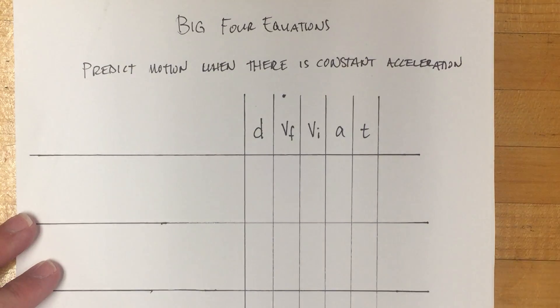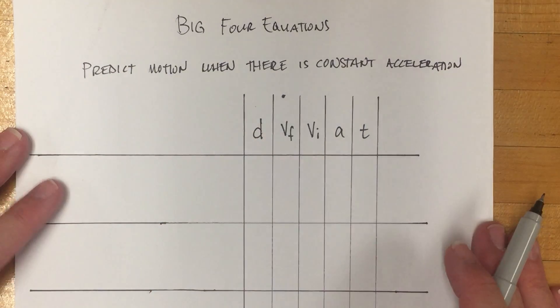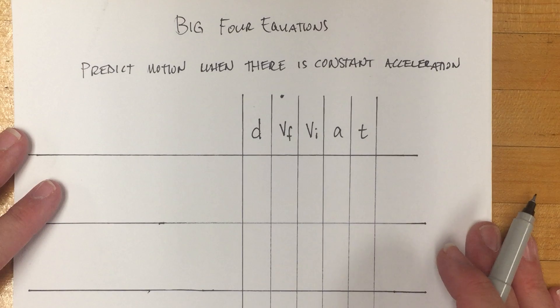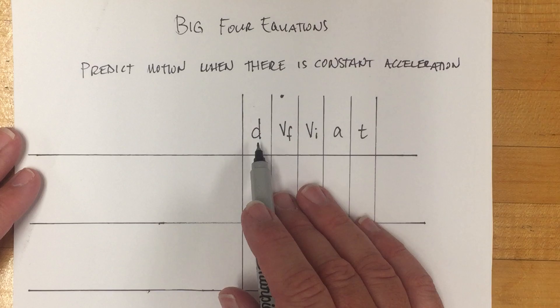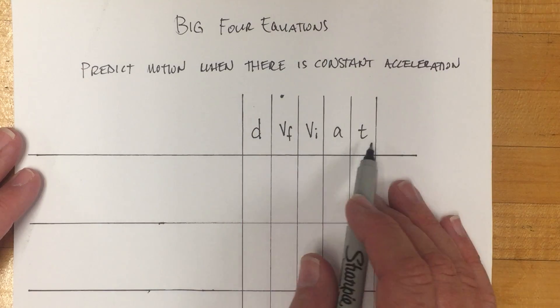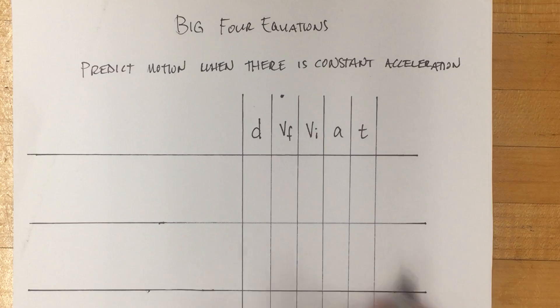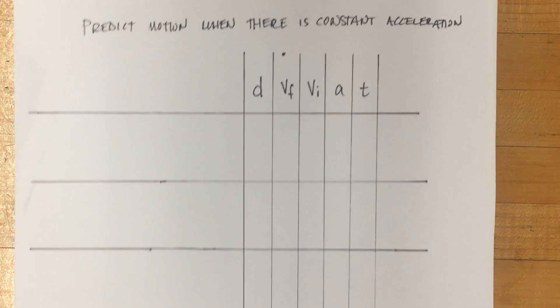The big four equations are a way to predict motion when there is constant acceleration. You have five variables that you're working with: d, vf, vi, a, and t. And in any of the equations, you'll have four of these variables present.